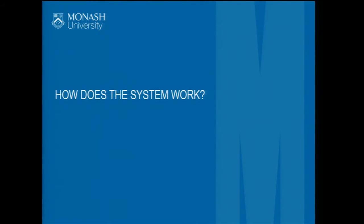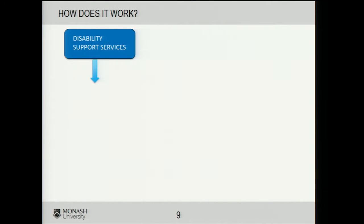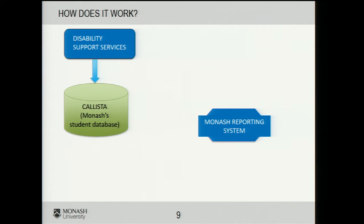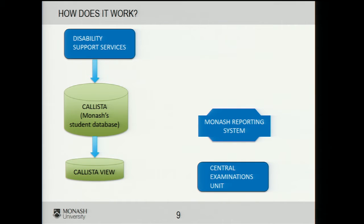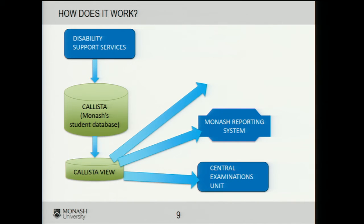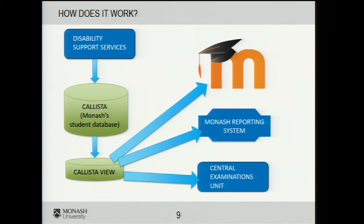So how does the system work? Students still have to register with Disability Support Services, and once confirmed and registered, Disability Support Services puts it in our Monash student database called Calista. We also have another system called the Monash Reporting System and the Central Examinations Unit, where the Calista view of the information goes to those two departments. We also put it in Moodle — there is a 24-hour link every day to update between Calista and Moodle. The development of the code behind this was through our third-party provider Blackboard.